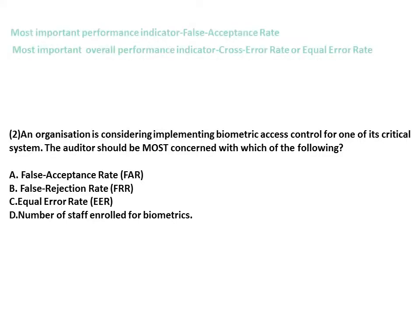Please remember: when an overall performance indicator is asked in the question, the answer should be Cross Error Rate. But when only a performance indicator is asked, the answer should be False Acceptance Rate.